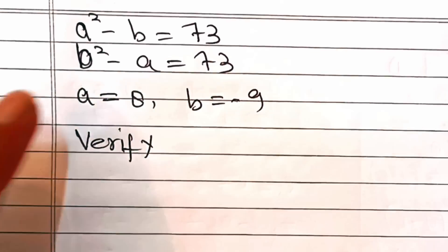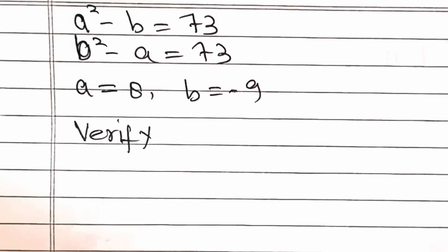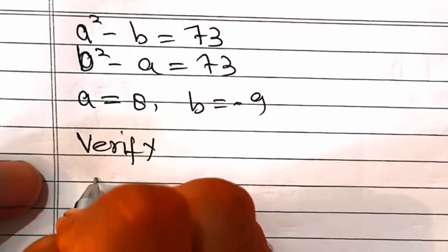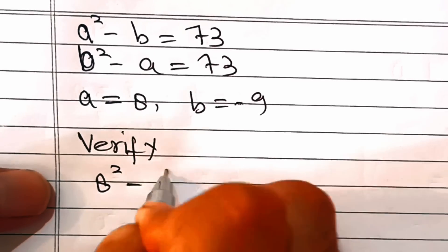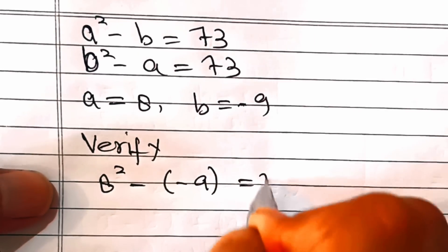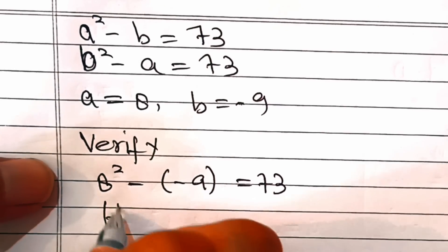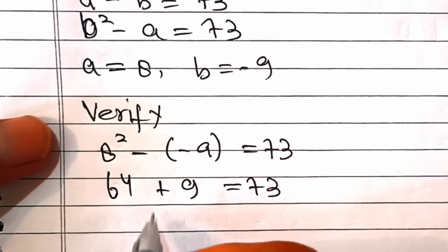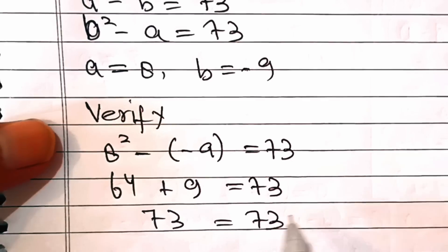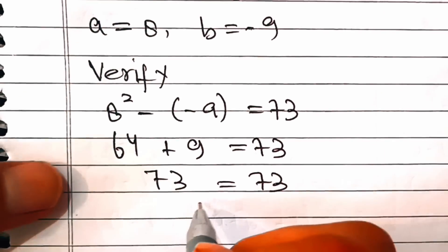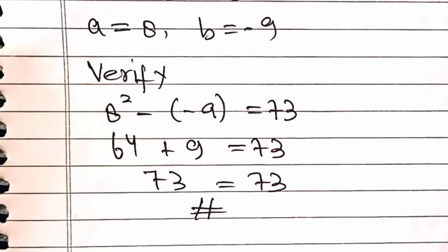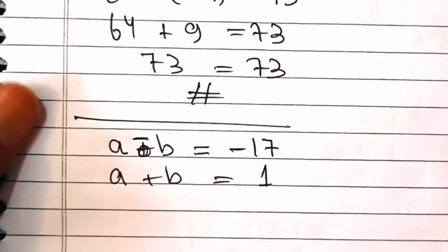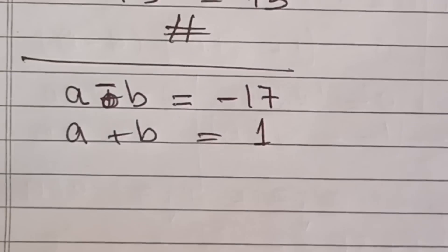Let's verify: substituting into equation 1, a squared minus b becomes 8 squared minus minus 9, which is 64 plus 9 equals 73. This is verified! Now if a minus b equals minus 17, what will be the values of a and b? Please tell me in the comment box. Thanks for watching the video.